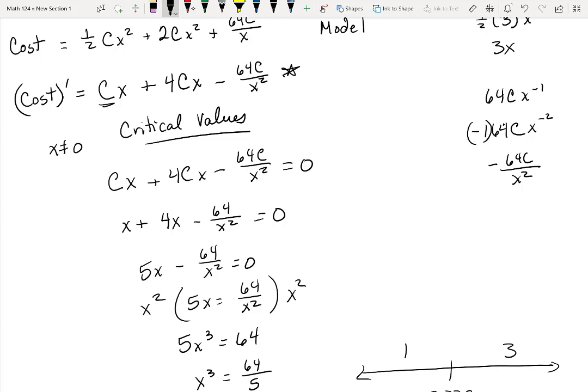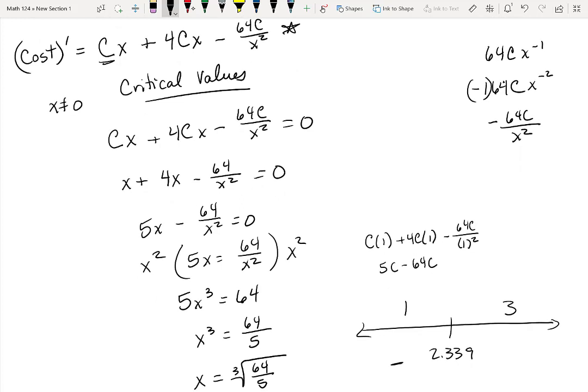I'm going to find my derivative. I'm going to plug in 1. And I'm going to assume cost is positive. So I'm going to get 1 plus 4. So c times 1 plus 4c times 1 minus 64c over 1 squared. So this is 5c minus 64c. And so this minus 64c is going to make this negative.